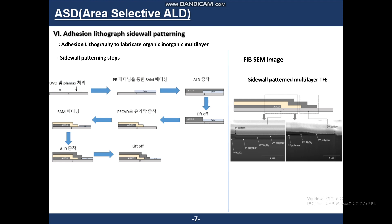This multi-layer process uses lift-up and PECVD for the organic layer. I repeated this process to fabricate an organic-inorganic multi-layer thin film. After fabricating this multi-layer thin film, I used FIB-SEM to confirm the structure. As the image shows, I was able to fabricate an organic-inorganic multi-layer thin film.